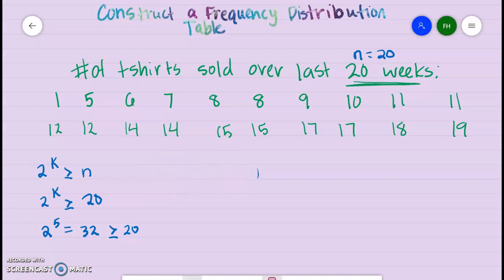So that's why we're going to have 5. Getting back to our problem, now we know that we're going to have 5 classes. After you determine your number of classes, you have to determine the class width.